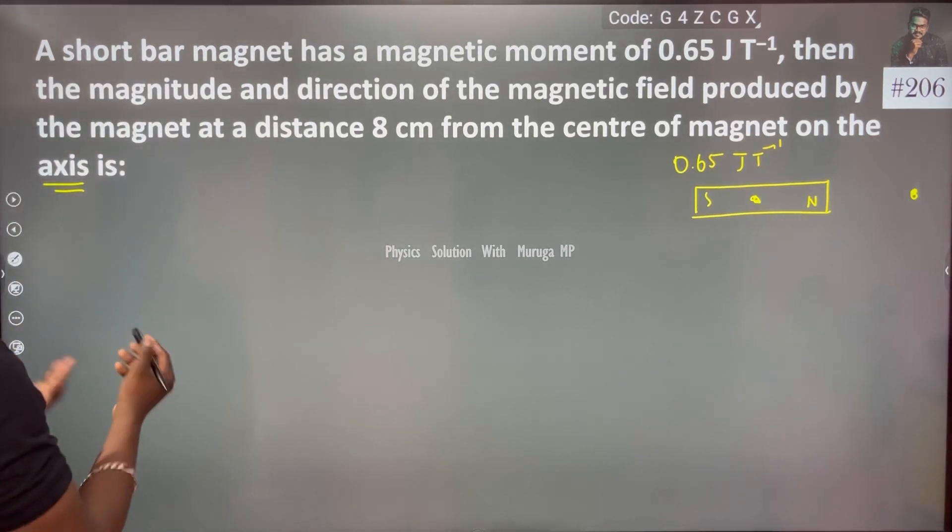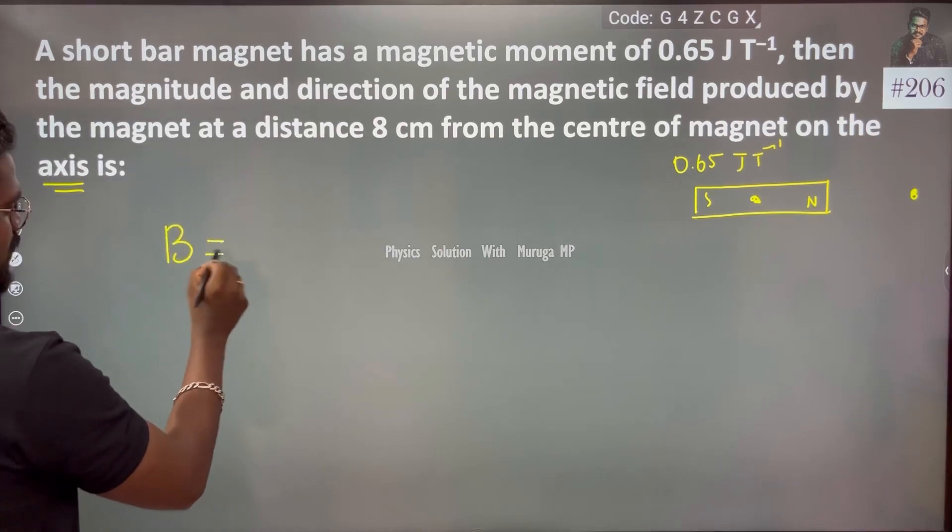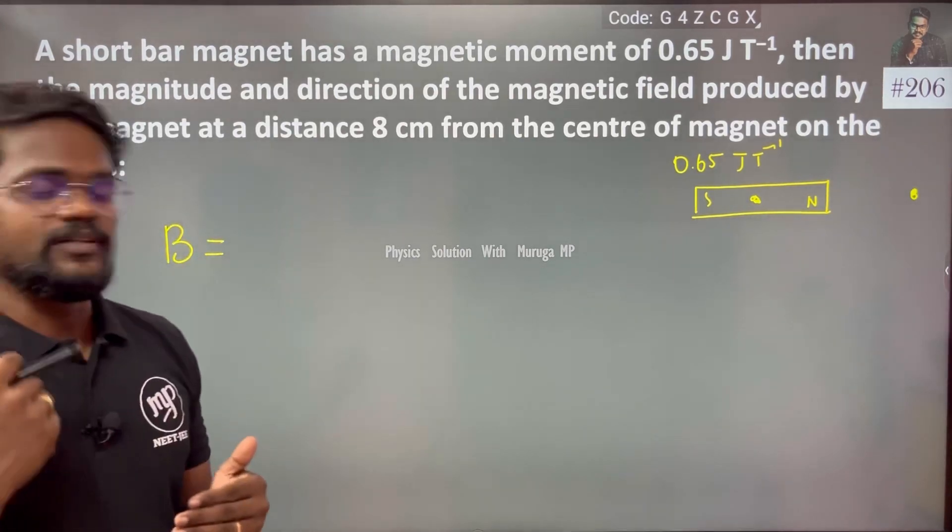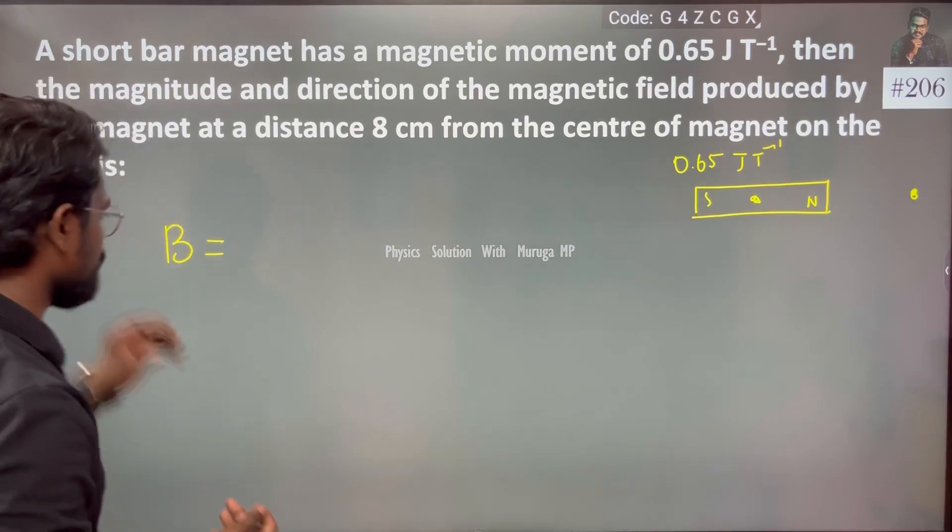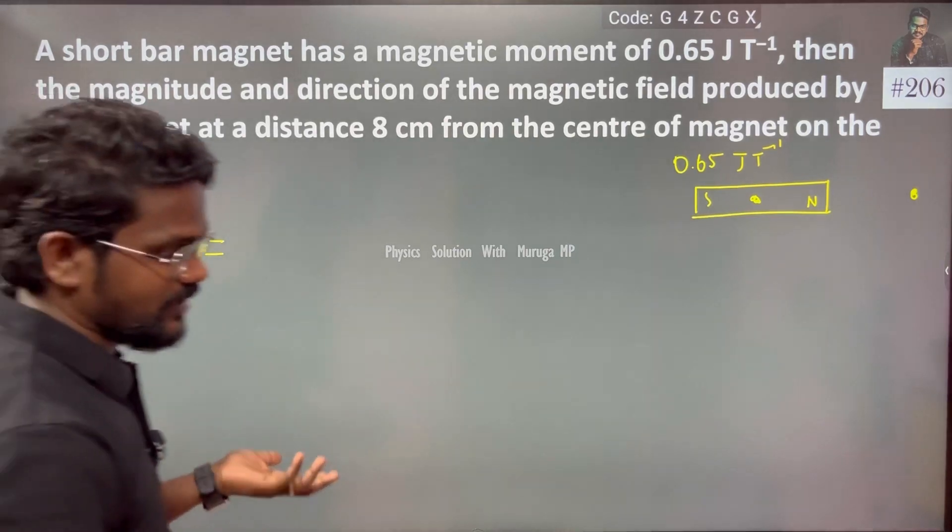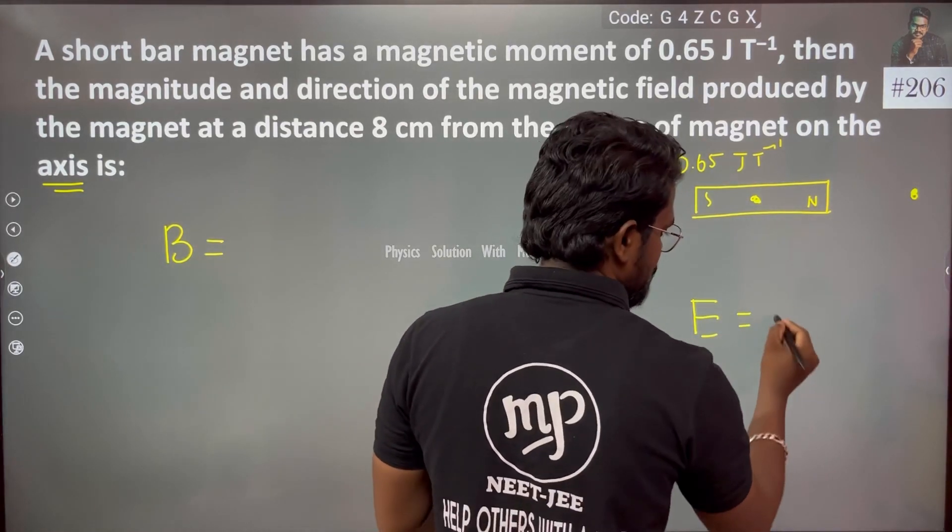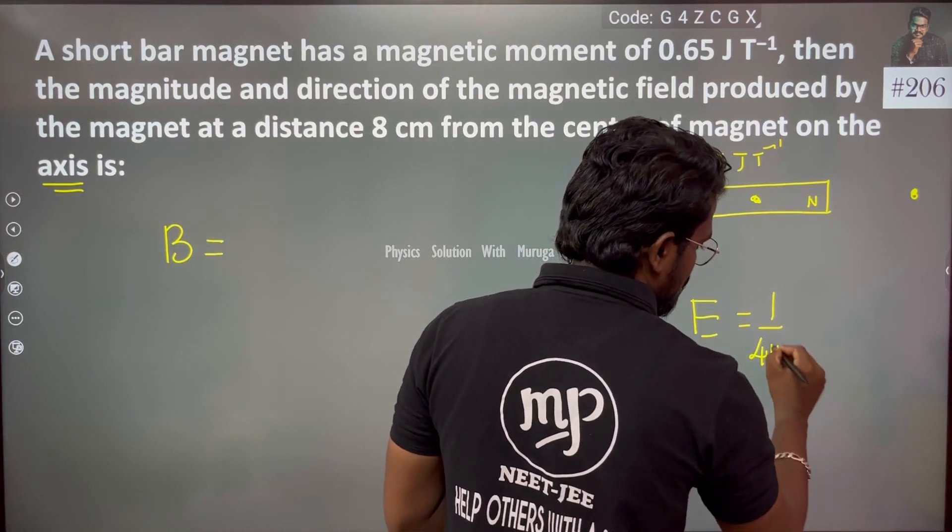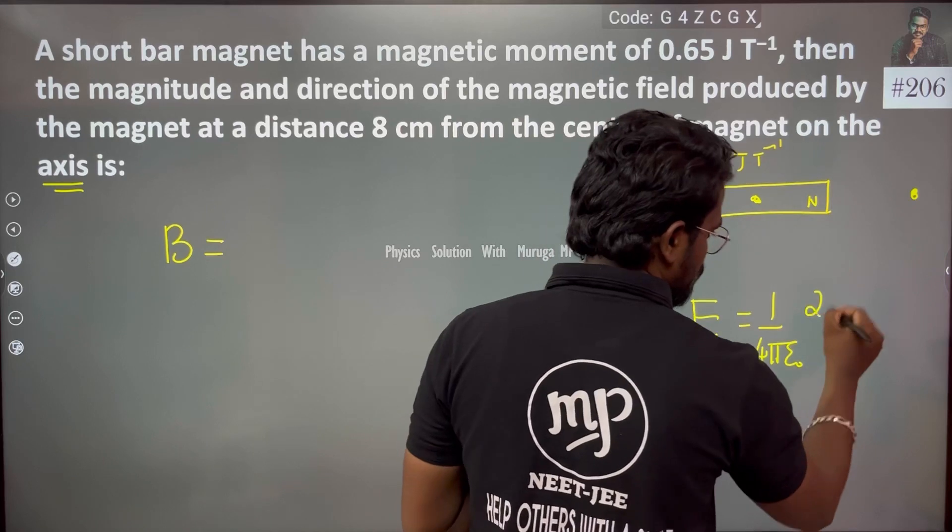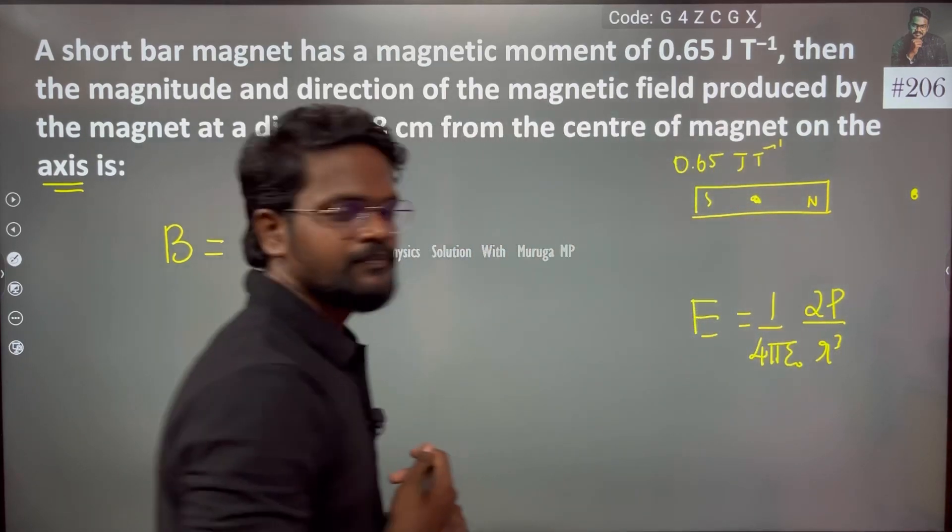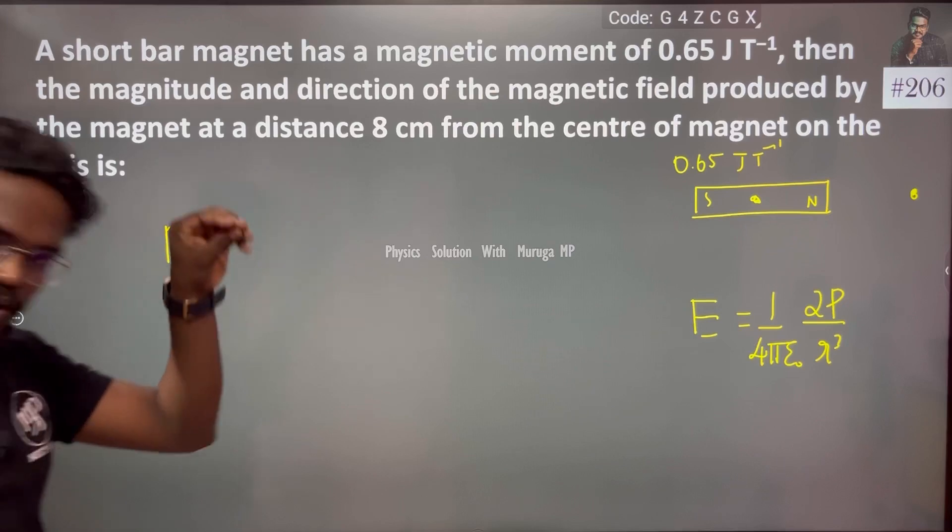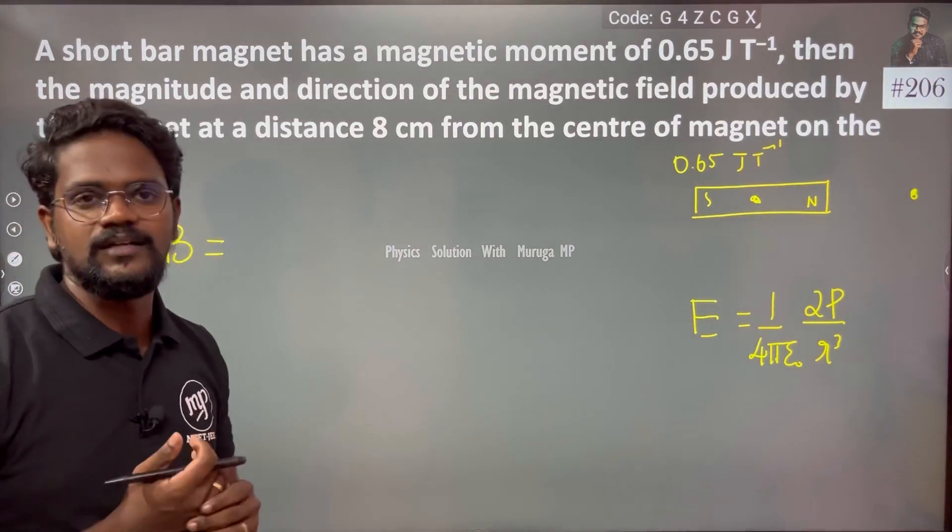First chapter we have electric charges and fields, so we have electric field and magnetic field. So electric field, we have 1 by 4πε₀ times 2 times p by r³ on the axial line for the dipole and the electric field.